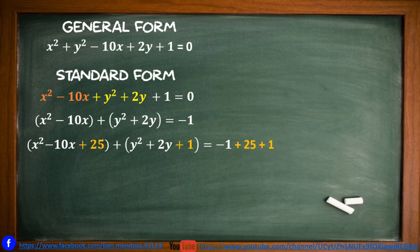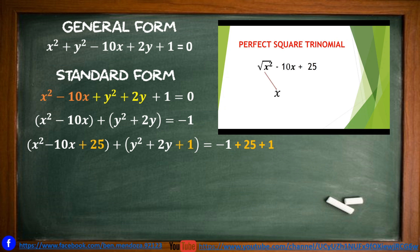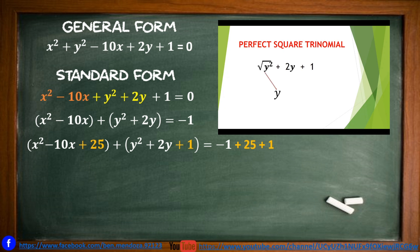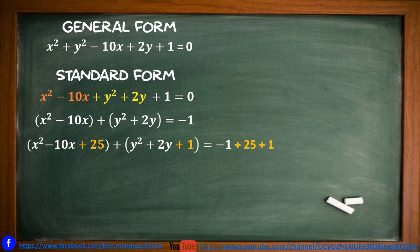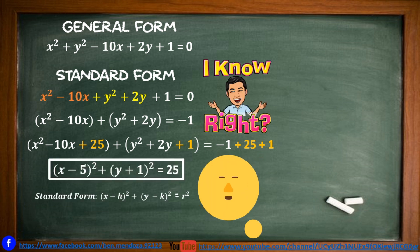Factor out the perfect square trinomials. For x squared minus 10x plus 25: square root of x squared is x, square root of 25 is 5, and the middle term sign is minus, giving the quantity of x minus 5 squared. For y squared plus 2y plus 1: square root of y squared is y, square root of 1 is 1, middle term sign is positive, giving the quantity of y plus 1 squared. The right side: negative 1 plus 25 plus 1 equals 25. Final answer: the quantity of x minus 5 squared plus the quantity of y plus 1 squared equals 25.